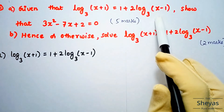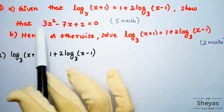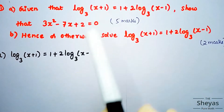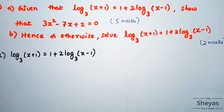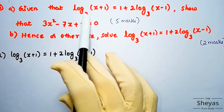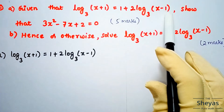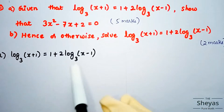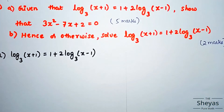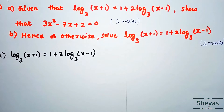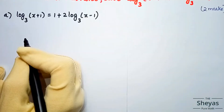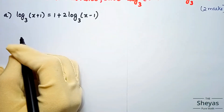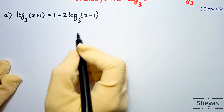So this is the given equation and we are going to show that 3x² - 7x + 2 = 0. Let us start Part A. The equation given is log base 3 of (x+1) is equal to 1 plus 2 log base 3 of (x-1).